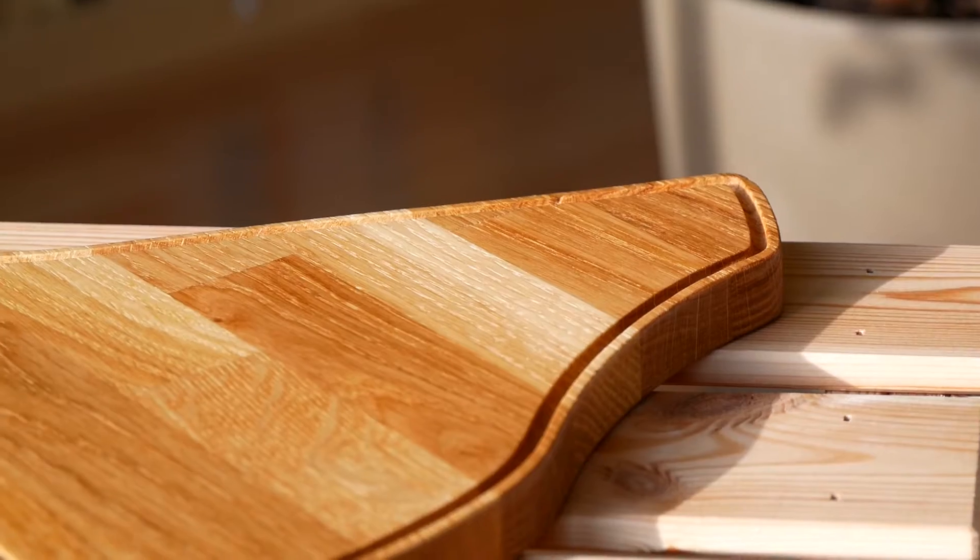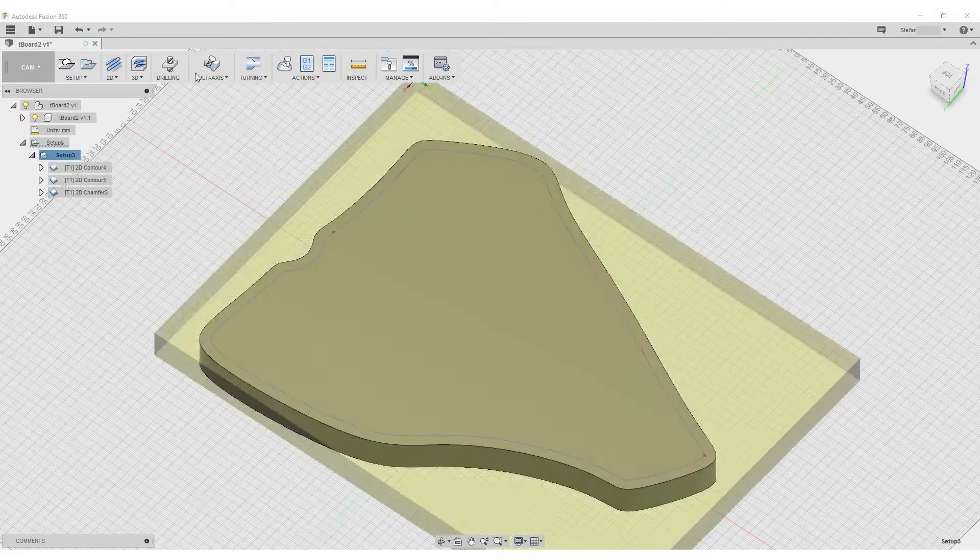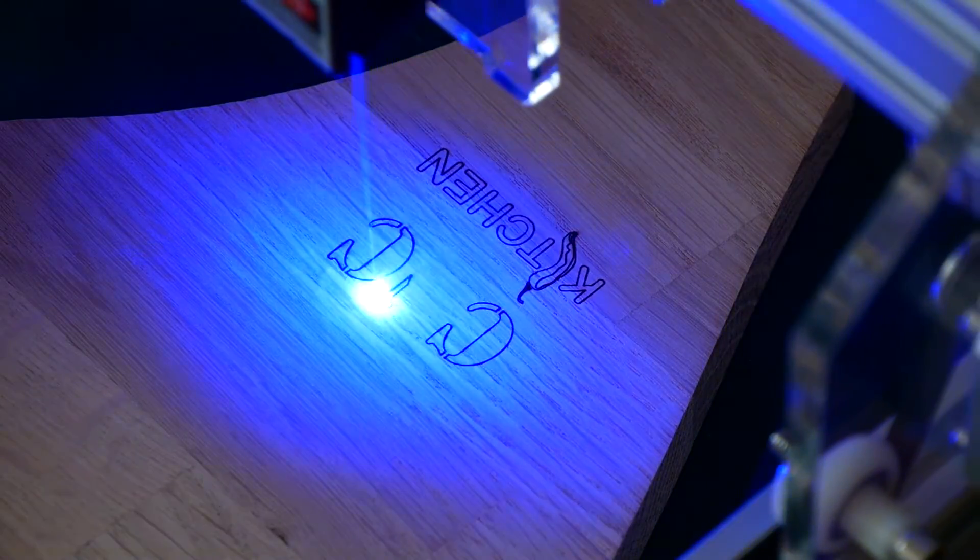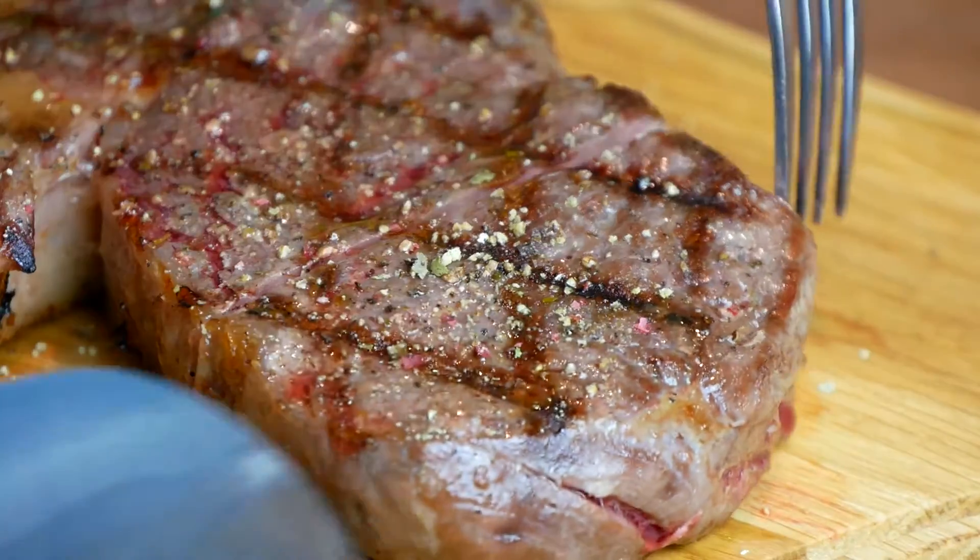We are going to make a beautiful kitchen steak board in the shape of a T-bone steak, which involves Fusion 360 CAD and CAM, routing it out, lasering, sanding, oiling and finally trying it out. I call it the T-board. Stay tuned.